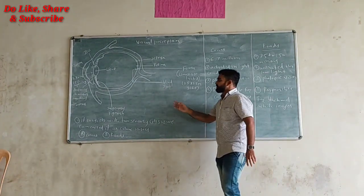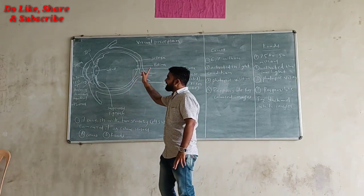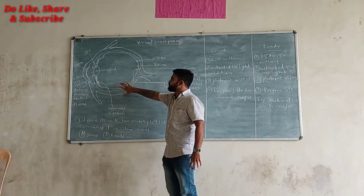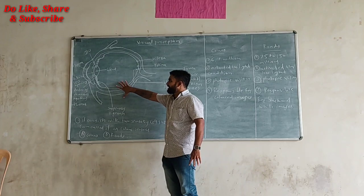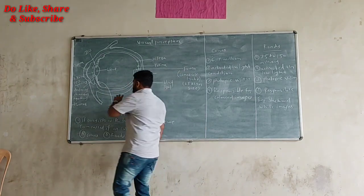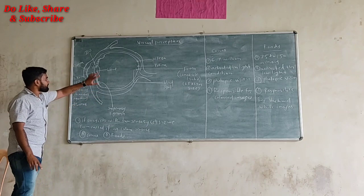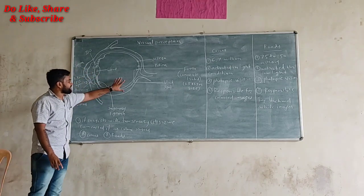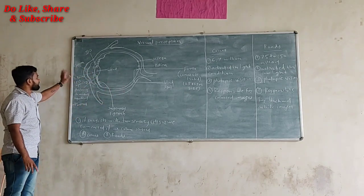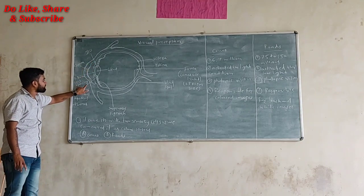So we are going to start the description of visual perception and the anatomical structure of the human eye. This is the structure of a human eye, and first we have to see what kind of things are there inside that eye. First, we have the cornea, which is the outer area of the eyeball.